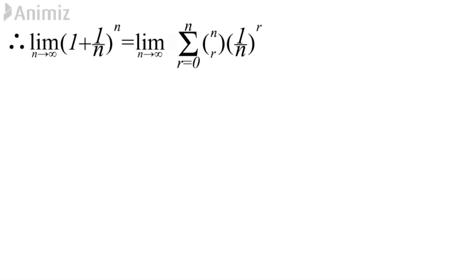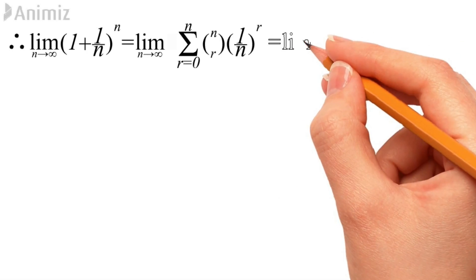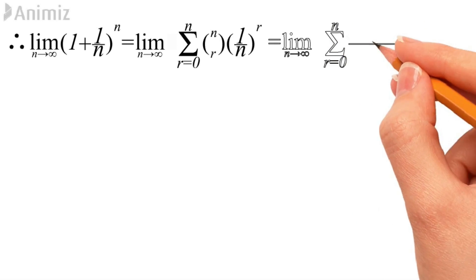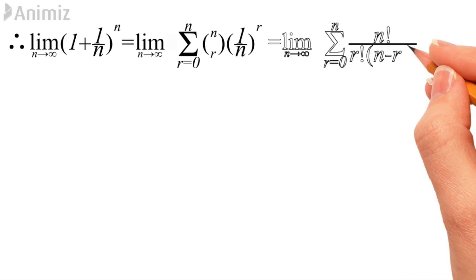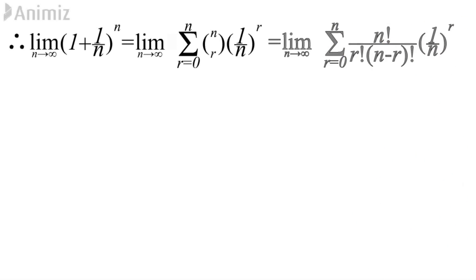Now, there is a combination nCr in the sum, so I am going to break it. We get: limit n→∞ of the sum of [n! / (r! · (n-r)!)] · (1/n)^r.